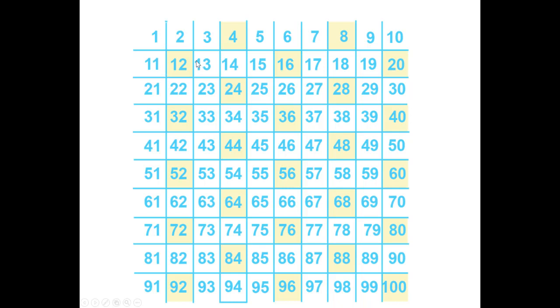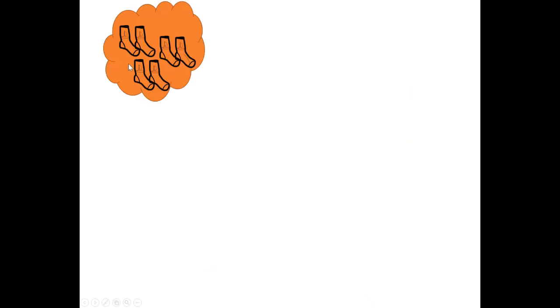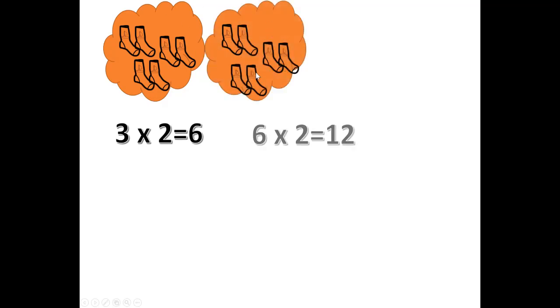To multiply a number by 4 we can double that number twice. So for 4 times 3 we double 3 to get 6, and double 6 to get 12.